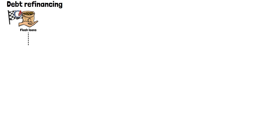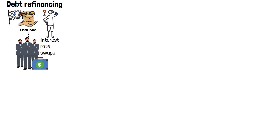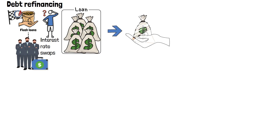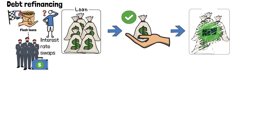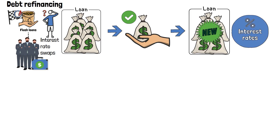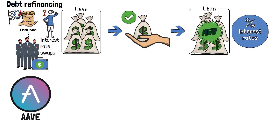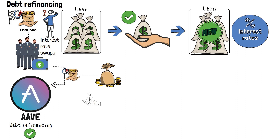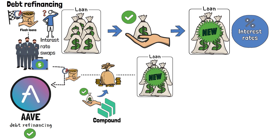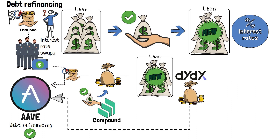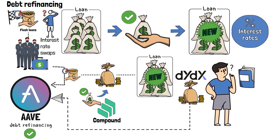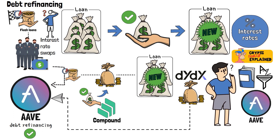The last flash loan use case covered here is debt refinancing, which allows investors to make interest rate swaps. Investors can use the loan to repay debt on another platform and use the newly received collateral to mint new debt, possibly securing a better interest rate. Aave issued a comprehensive example: execute a flash loan on Aave, use the funds to pay back debt and withdraw collateral from Compound, then deposit that collateral and mint new debt on other DeFi platforms like DDEX, and finally return liquidity to Aave.